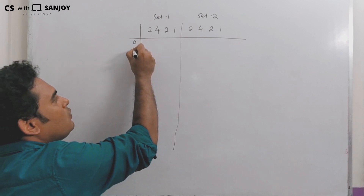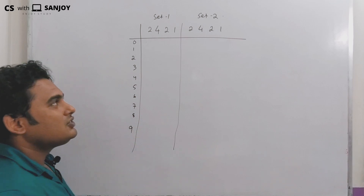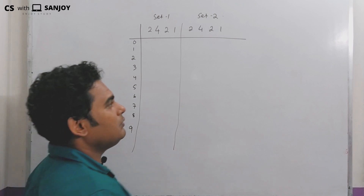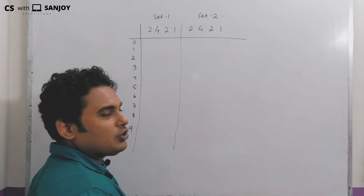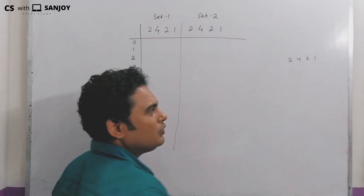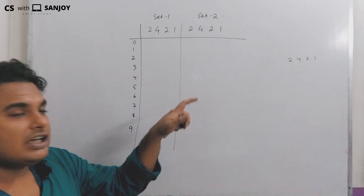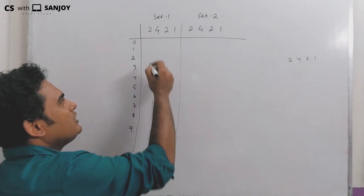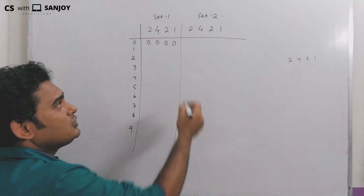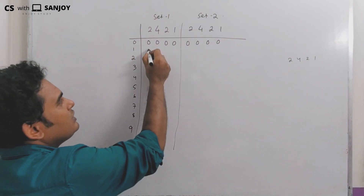So the digits are 0, 1, 2, 3, 4, 5, 6, 7, 8, 9. I am going to write Set 1 and Set 2 representations for each. The code conversion will be in Set 2. For digit 0, the representation is 0, 0, 0, 0.